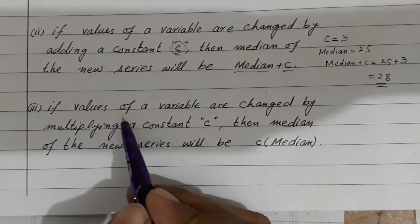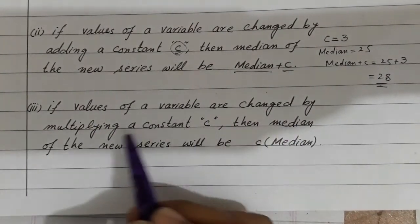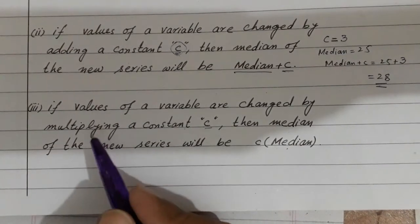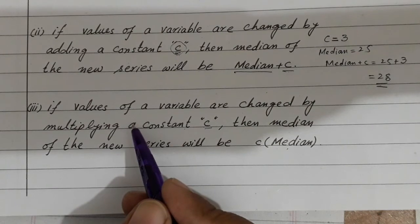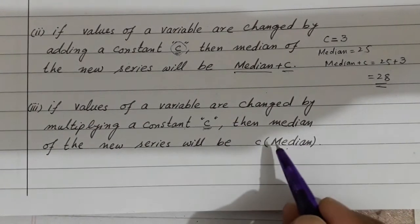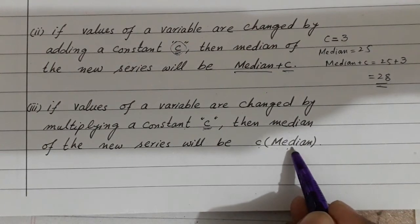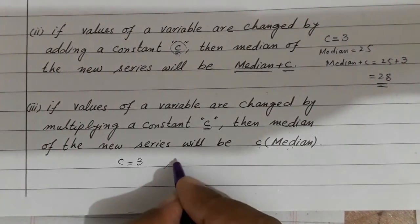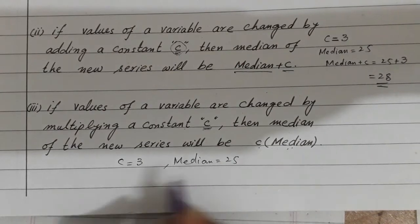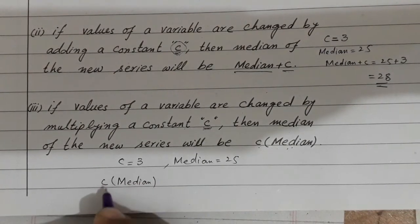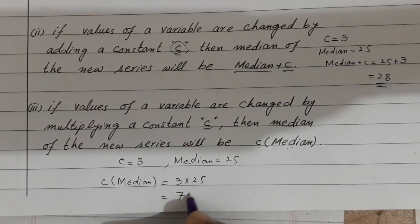Third property: If values of a variable are changed by multiplying a constant c, then median of the new series will be c multiplied by median. اگر series کے تمام observations کے ساتھ کوئی بھی constant c multiply کیا جائے تو نئے series کا median، c multiplied by median ہوگا۔ مثال کے طور پر اگر c = 3 ہو اور پہلے median 25 تھا، تو نئے series کا median = 3 multiplied by 25 = 75 ہوگا۔